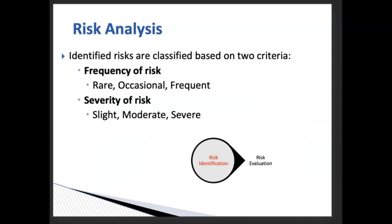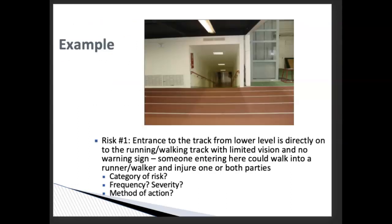The second step is risk analysis. There are two criteria: first, the frequency of the risk — how often will this occur? Will this happen on a daily basis or maybe just once? Is it very occasional or frequent? Second, the severity of the risk — if the risk occurs, how serious will the outcomes be? Would it be a slight risk, moderate risk, or severe risk? These are the factors we have to assess.